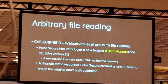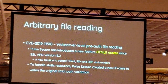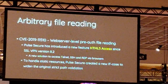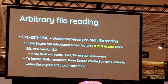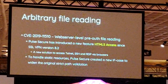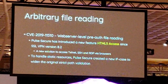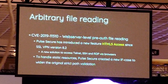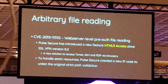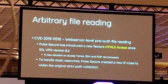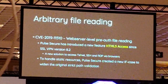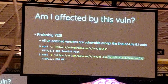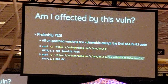The first vulnerability is the root file reading. PulseSecure introduced a new feature called HTML5 access since version 9.2. It can access telnet, SSH, and remote desktop by process. In order to support the new feature, PulseSecure added a new if-condition to handle all standard resources. Thanks to this new feature, the original string validation has been bypassed. All unpatched versions except end-of-life versions are affected.